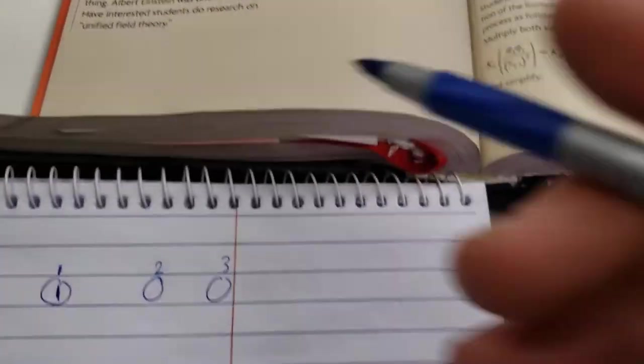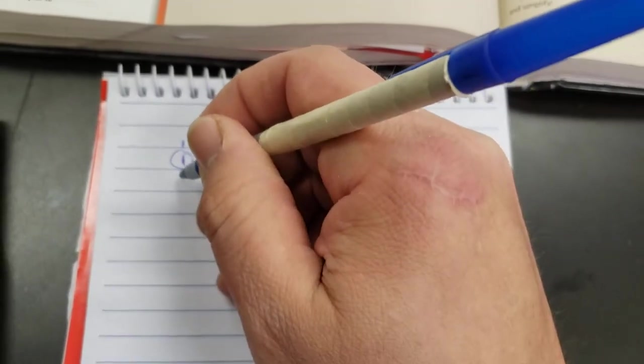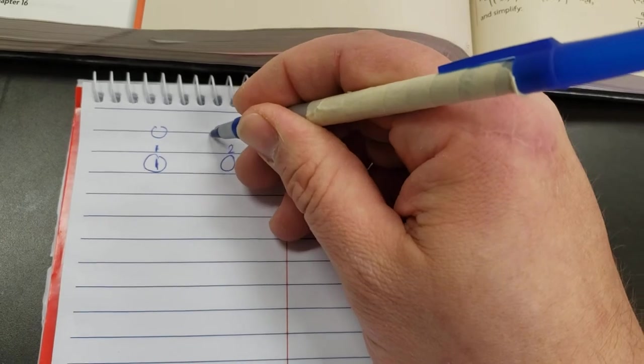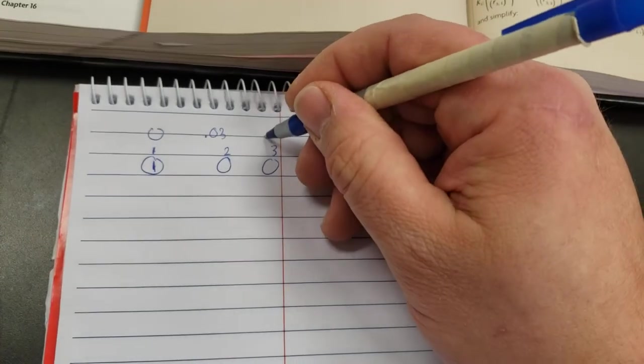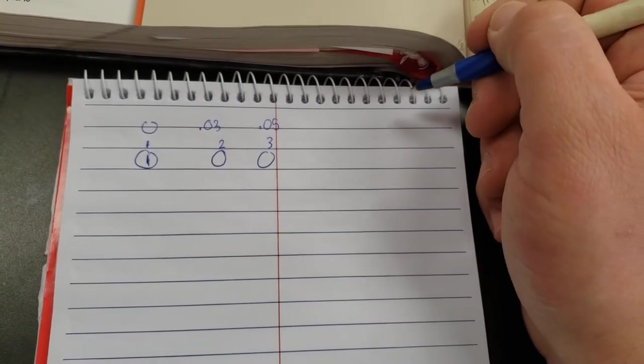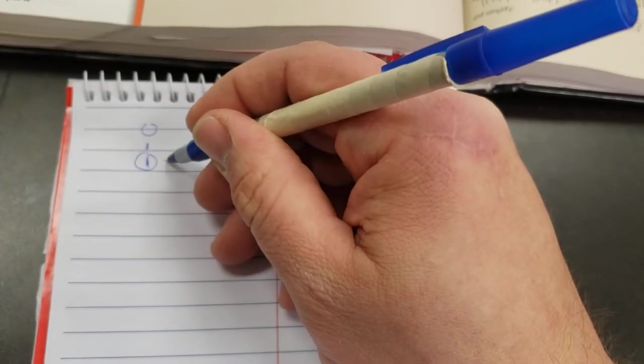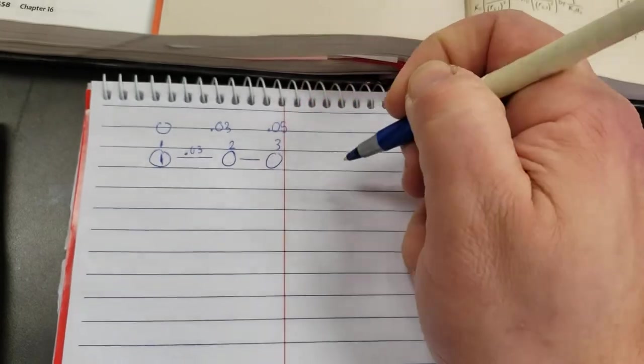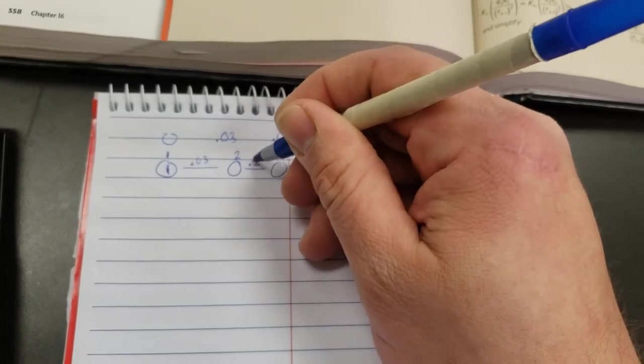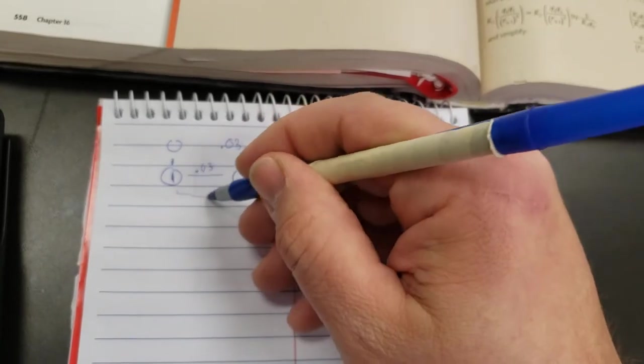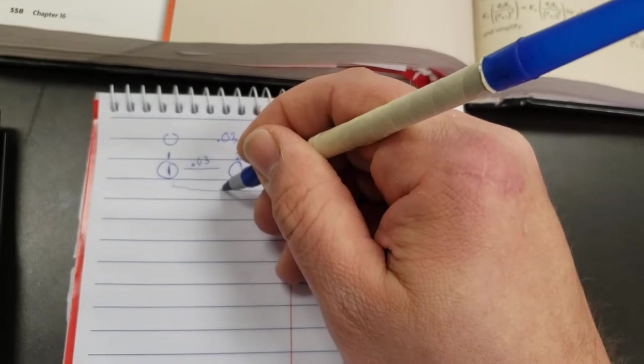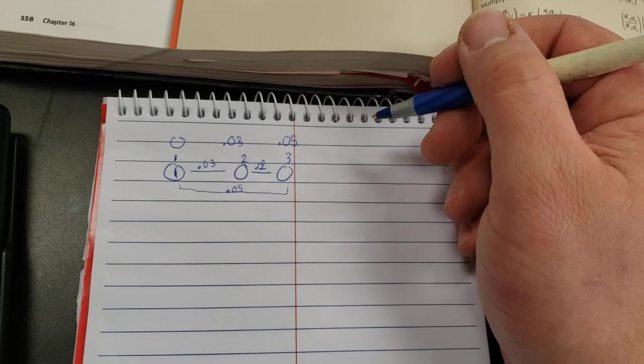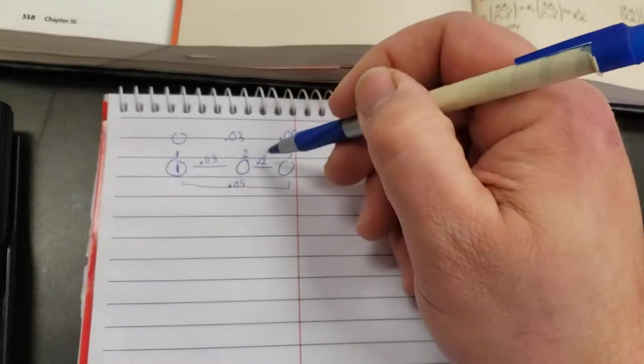So let's set this drawing up right here. We are at the origin, we are at 3 centimeters, and we are at 5 centimeters. Now, what that means is your distance between numbers 1 and 2 is 0.03 meters. Your distance between 2 and 3 is 0.02 meters. And then the distance between number 1 and number 3 is 5 centimeters. That's an important point that a lot of people miss, is that 2 here and the 5 here.